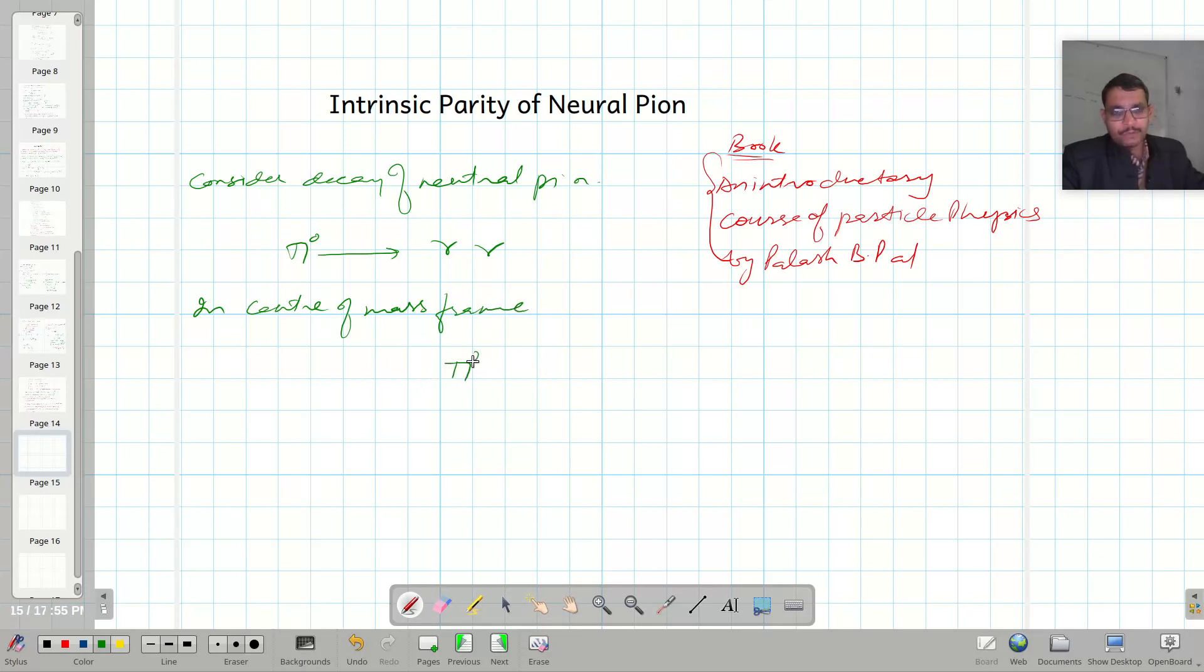I can write down that pi0 gives us the gamma ray photon. Both are pointing in the opposite direction. So let their momentum be k2 and k1, k and minus k vector. Since h-bar k equals p, but in natural units k equals p because h-bar equals 1 in natural unit. That is why I am representing it by a k vector.